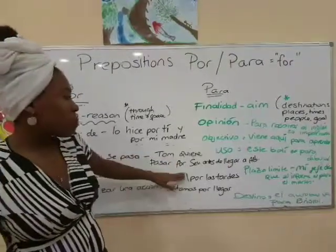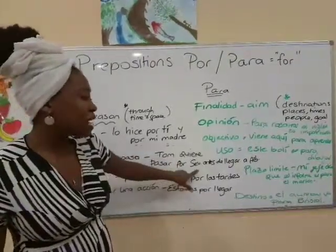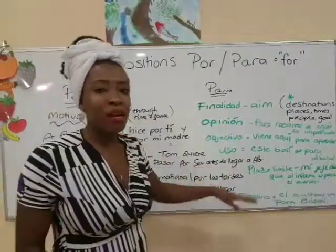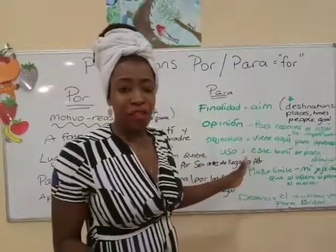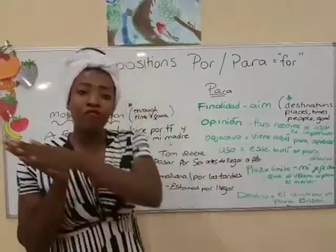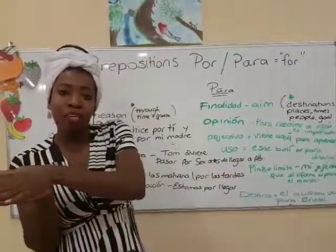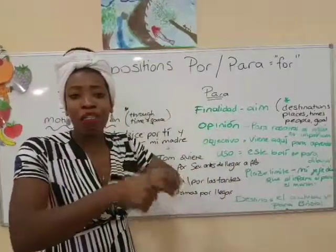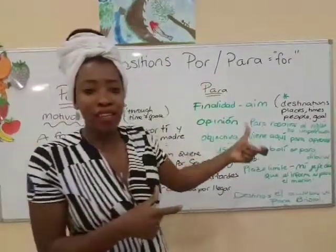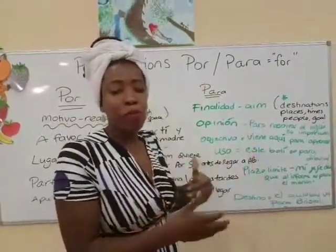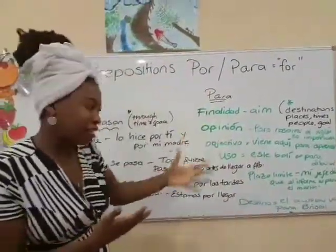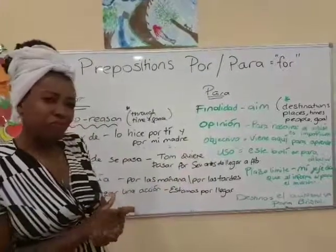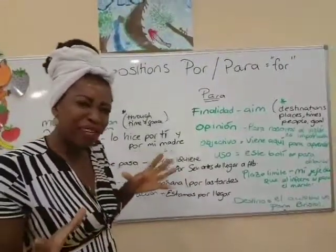The next use of 'por' is passing through a place. For example, 'pasar por Siria' or 'pasar por Albacete' — you're passing from one place through another, through a city. That's the example: you're passing through a place.